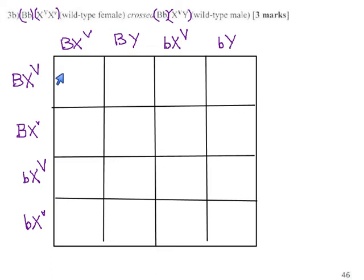Normally, when we do a square like this, we expect to see 9, 3, 3, 1. Will we get that this time when there's sex chromosomes in play? I'm actually not sure. Let's watch for it. We'll see what emerges as we go through this.